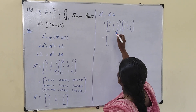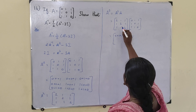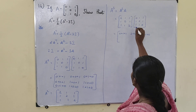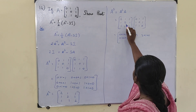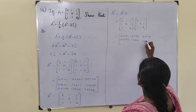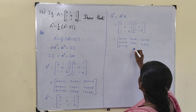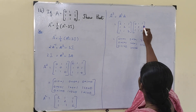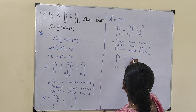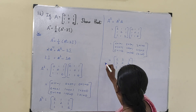Computing A cube: first row, first column: 0+1+1=2; first row, second column: 2+0+1=3; first row, third column: 2+1+0=3. Second row, first column: 0+2+1=3; second row, second column: 1+0+1=2; second row, third column: 1+2+0=3. Third row, first column: 0+1+2=3; third row, second column: 1+0+2=3; third row, third column: 1+1+0=2. So A cube equals [2,3,3; 3,2,3; 3,3,2].